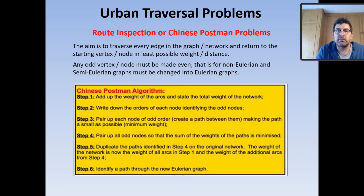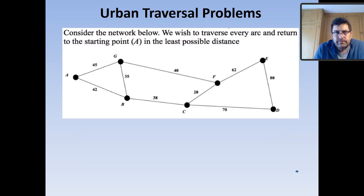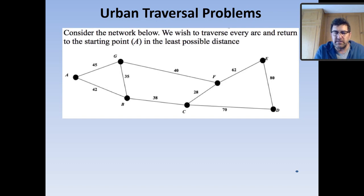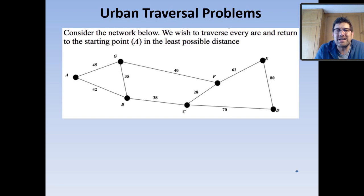There is a graph with weights — which could mean distance between cities, travel time, or cost of building roads. We want to create an Eulerian circuit. There are four odd-valent vertices: G, B, C, and H. The weight of the graph is the sum of all edges: 440. Pause and Eulerize using minimum weight edges. The shortest paths are 35 and 28 for one pairing, and 40 and 38 for the other. Choosing the minimum: 35 and 28 — we add those two edges.